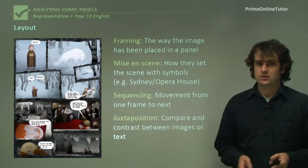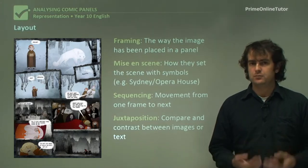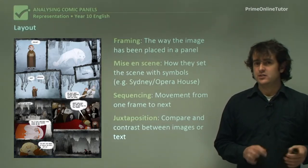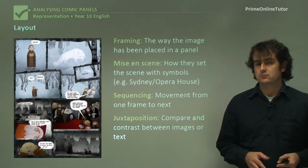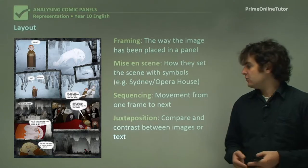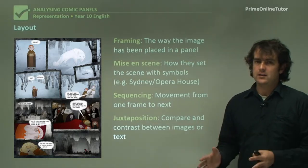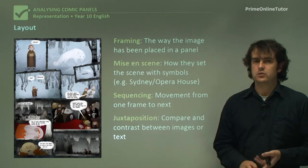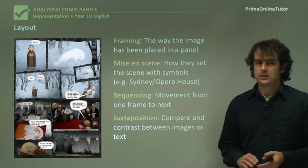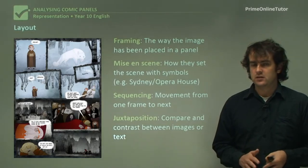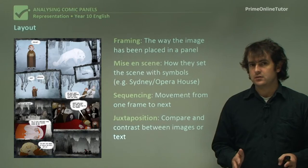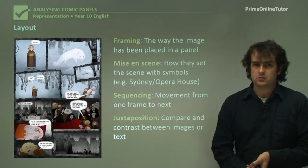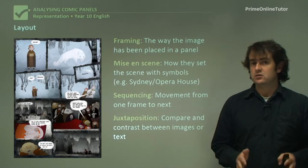Juxtaposition is the next term we're going to look at, and it is quite a complicated one. However, it's something you've probably looked at before — it's a term that a lot of English students get stuck on, and it gets used in a lot of different text types. Basically it's about how you are comparing between one thing and another, but also contrasting it — pointing out the similarities and differences between two things. So if you are pointing out the difference and similarities between the text and images, for instance, text and images are quite different because one's words and one's images.